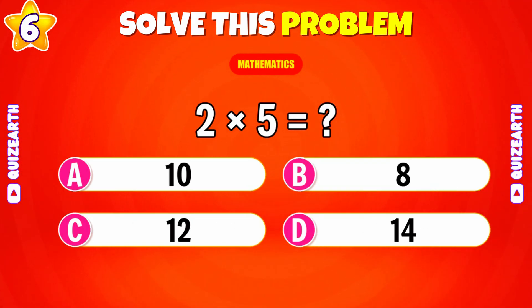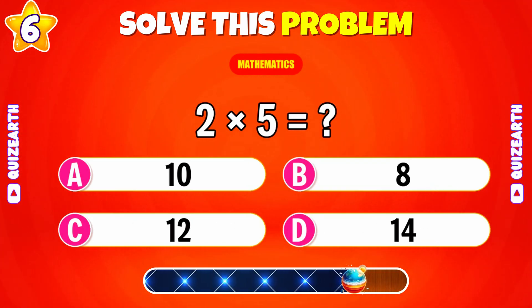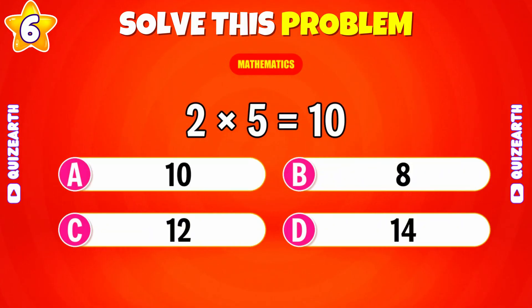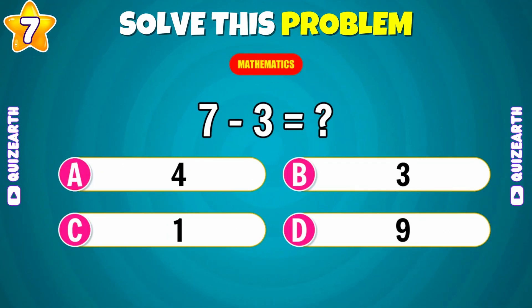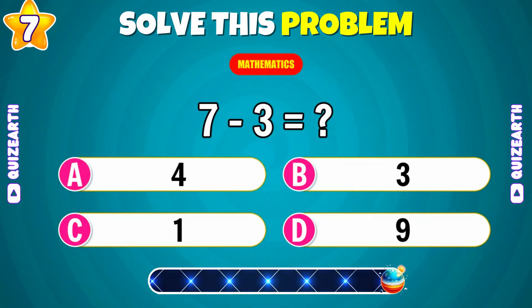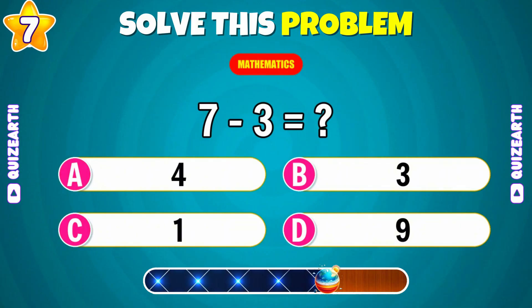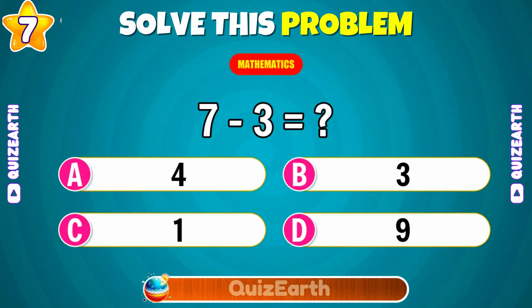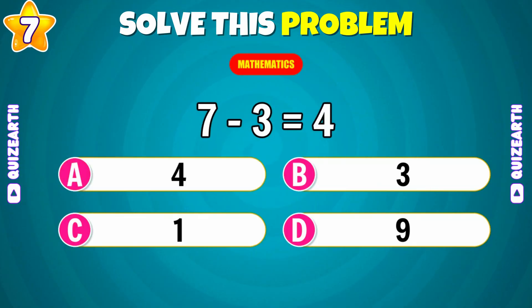Alright, two times five? Great job! It's ten. Here's another. Seven minus three? You got it. Four.